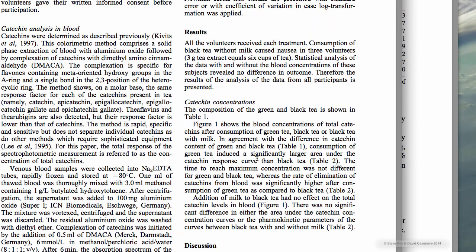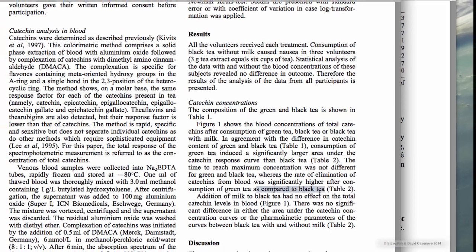In the case of the tea paper, consumption of green tea induced a significantly larger area than black tea. The time to reach maximum concentration was not different, whereas the rate of elimination of catechins from blood was significantly higher as compared to black tea.